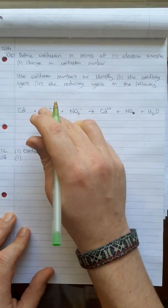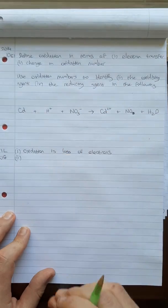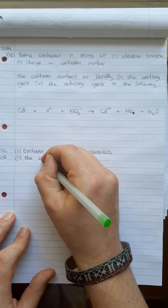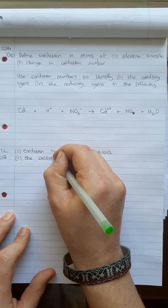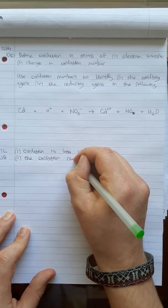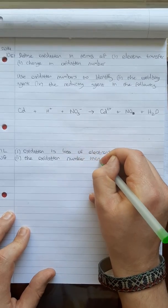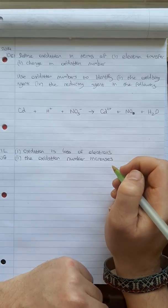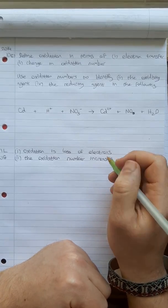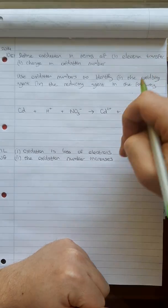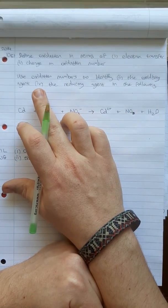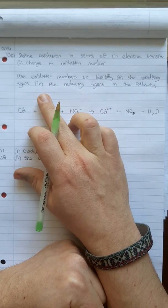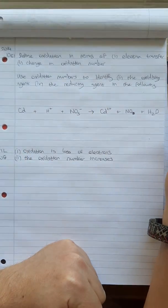And in terms of the change in oxidation number, well, if you're losing electrons, the oxidation number goes up. So the oxidation number increases because electrons have a negative charge. So that answers the first part for three marks each. The next part then goes on to have a look at oxidation numbers, identifying the oxidation agent and the reducing agent, and then balancing the equation.